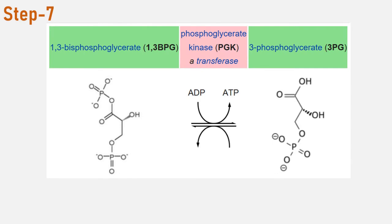Each 1,3-bisphosphoglycerate is subsequently dephosphorylated — i.e., the phosphate is removed — by phosphoglycerate kinase into 3-phosphoglycerate. Each phosphate released in this reaction can convert one molecule of ADP into one high-energy ATP molecule, resulting in a gain of 2 ATP molecules.